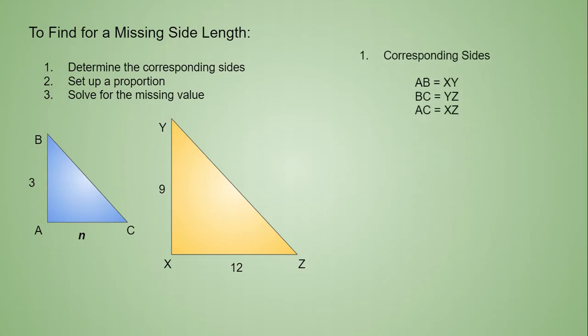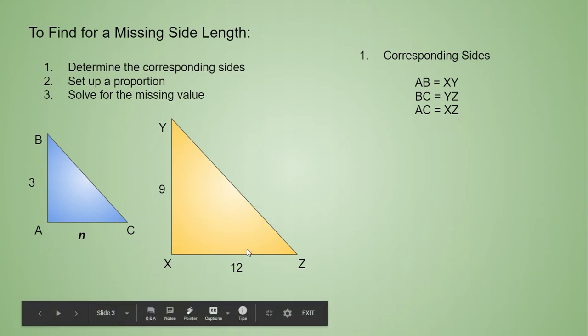So first, we're going to do the corresponding sides. Just like before, AB would be equal to XY. So this line here, AB, is to XY. BC would be equal to YZ. And then AC would be equal to XZ. These are all corresponding sides.